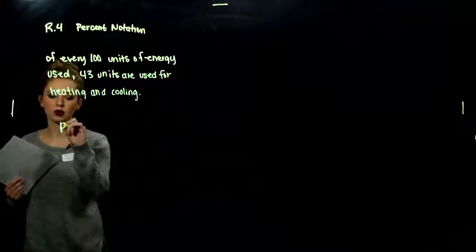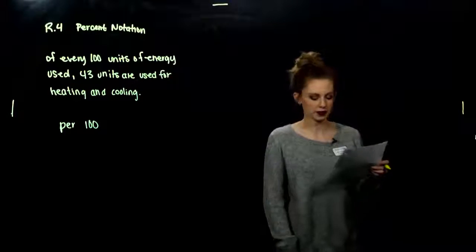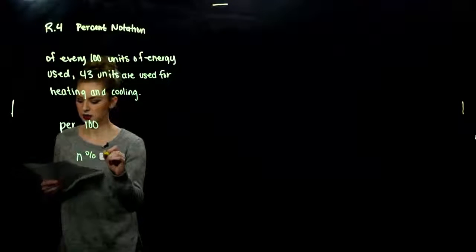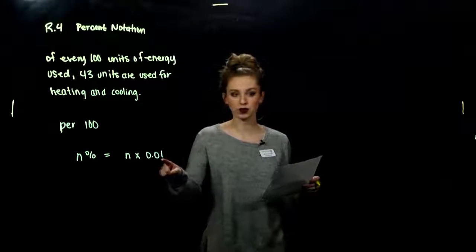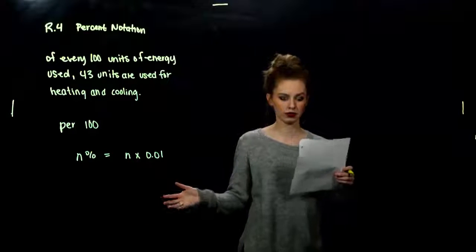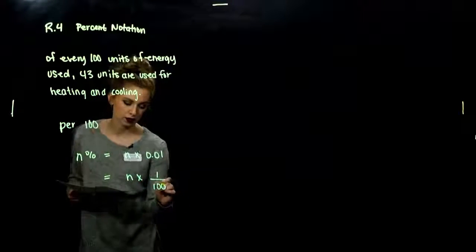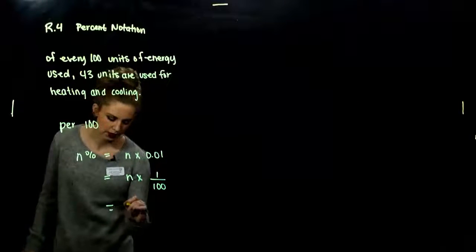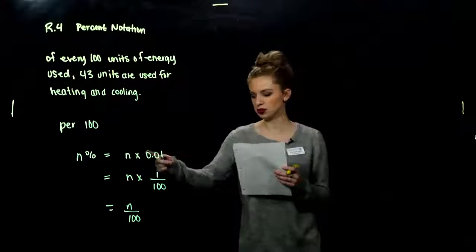Percentage means per 100, whatever units we're talking about. For notation, we have a bunch of different forms that are all equivalent. N percent means n times 0.01, because it's per 100. So n per one-hundredth of a unit. Another way we could write it equivalently is in fraction notation: 1 out of every 100 times whatever units we're working with. Or we could just say n over 100 units. They all mean the same thing — n percent. Whichever form you're most comfortable with, you can run with.